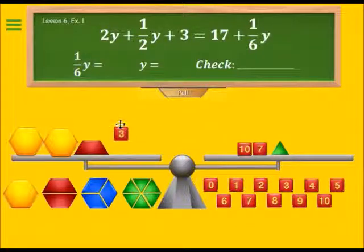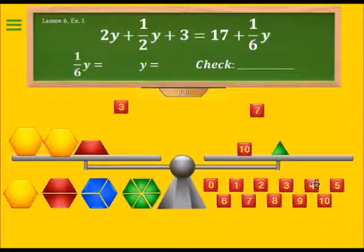Let's take away a three value from this side and a three value from this side, so the seven becomes a four.